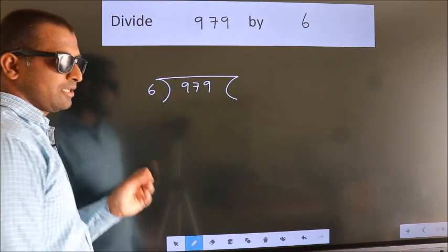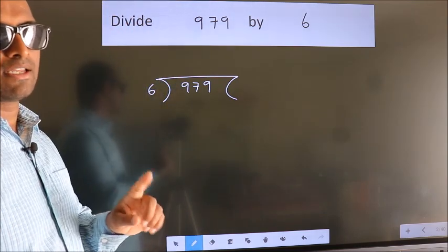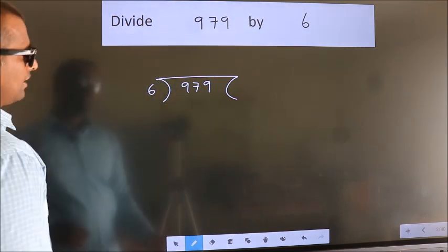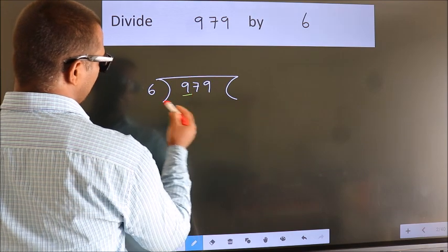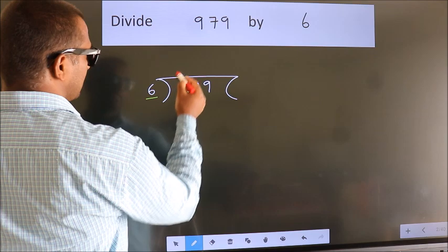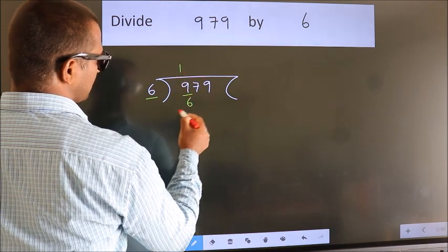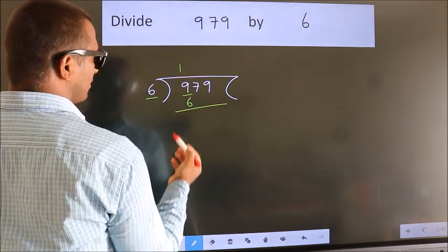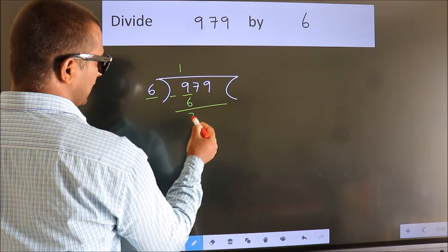This is step 1. Next, we have 9 here, 6 here. A number close to 9 in the 6 table is 6 once, which is 6. Now we subtract and get 3.